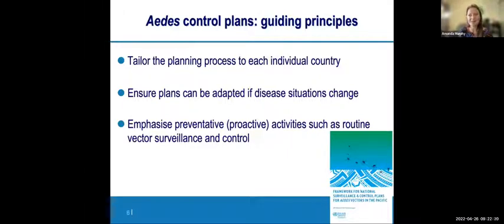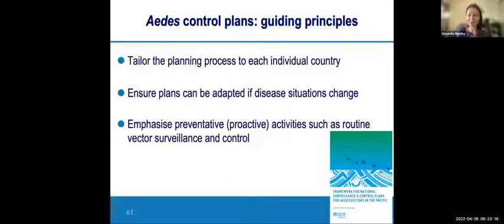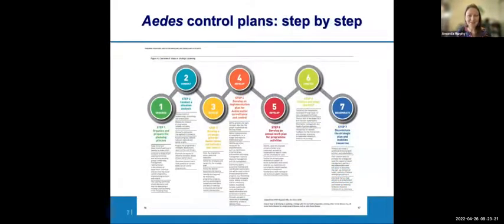It's important to remember that these plans are not static documents — they're always being reviewed. We recommend reviewing strategic plans every three to five years, and they can be adapted as you learn more or as your situation changes. The most effective approach to Aedes-borne diseases is to be proactive about vector control activities, with vector surveillance being key, rather than reactive. Of course, we need to know what to do when outbreaks happen too, but prevention is better than cure.